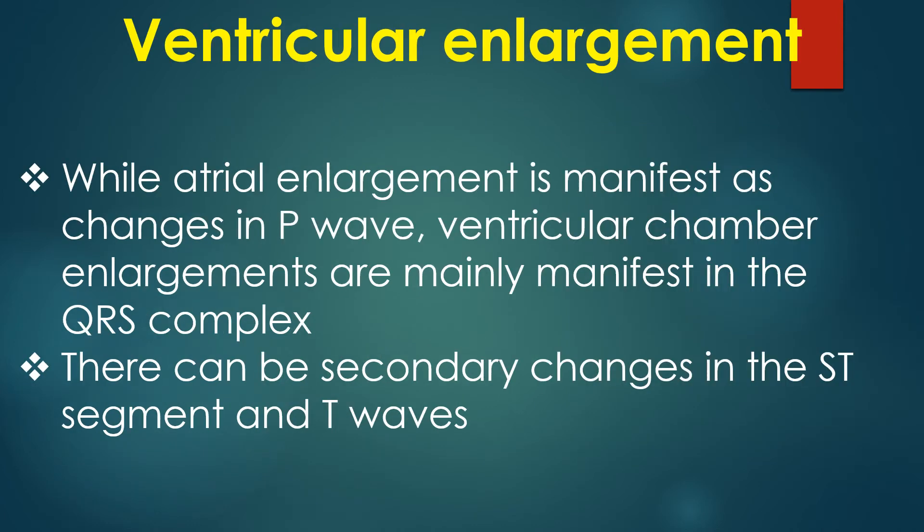While atrial enlargement is manifest as changes in the P wave, ventricular chamber enlargements are mainly manifest in the QRS complex. There can also be secondary changes in the ST segment and T waves.